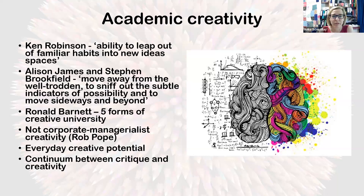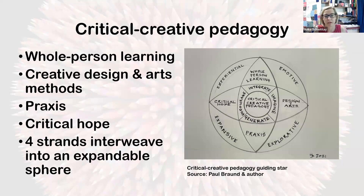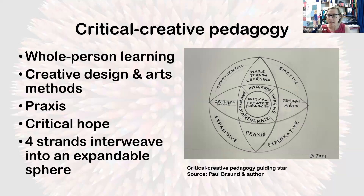Having given that theoretical preamble, here is what this critical creative pedagogy looks like. It consists of four different strands interwoven in an integrated whole: the first is whole person learning; then the use of creative design and arts methods; praxis; and all of that feeding into nurturing students' critical hope. I call it a guiding star or flower of critical creative teaching. These four strands are interwoven and can be as small or as large as you want them to be.